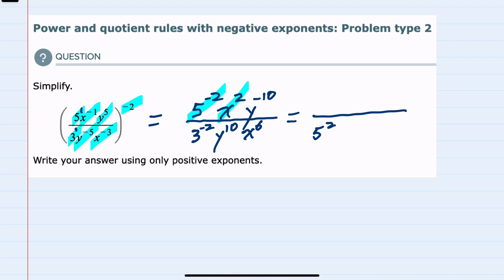The y negative 10 would move to the bottom as a y^10.